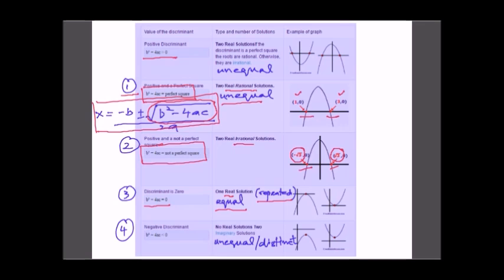The third case is when the discriminant value is negative. In that case, the roots will be complex — they will be imaginary solutions. The roots will still be unequal or distinct. So by looking at the discriminant value, you can determine the nature of the roots.